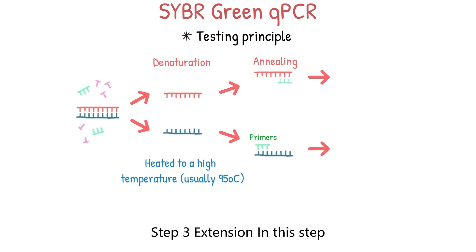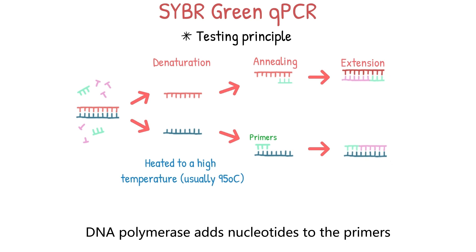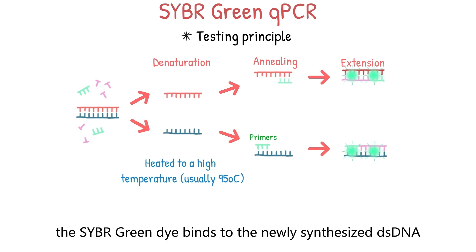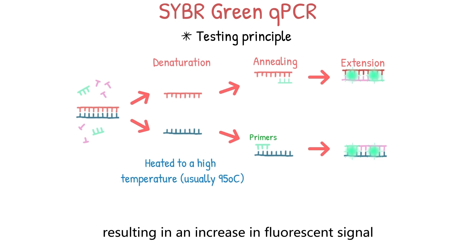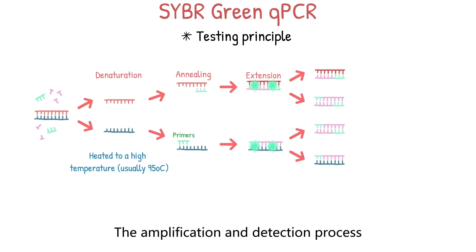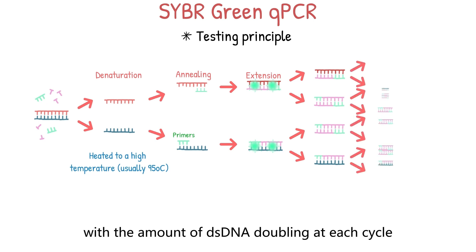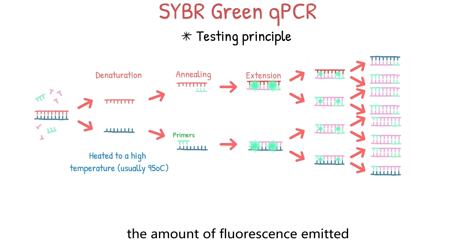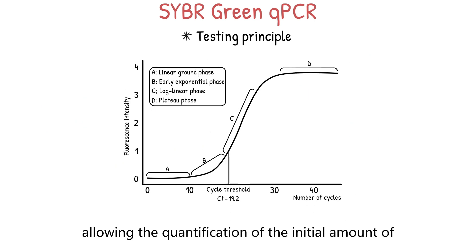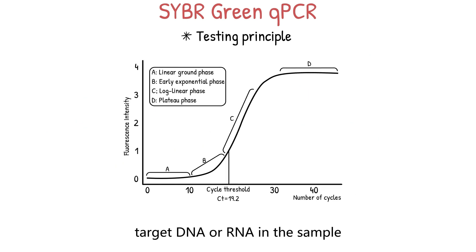Step three is extension. DNA polymerase adds nucleotides to the primers, creating a new strand of dsDNA. During this process, the CyberGreen dye binds to the newly synthesized dsDNA, resulting in an increase in fluorescent signal. The amplification and detection process is repeated multiple times, with the amount of dsDNA doubling at each cycle. After each cycle, the amount of fluorescence emitted by the CyberGreen dye is measured, allowing quantification of the initial amount of target DNA or RNA in the sample.